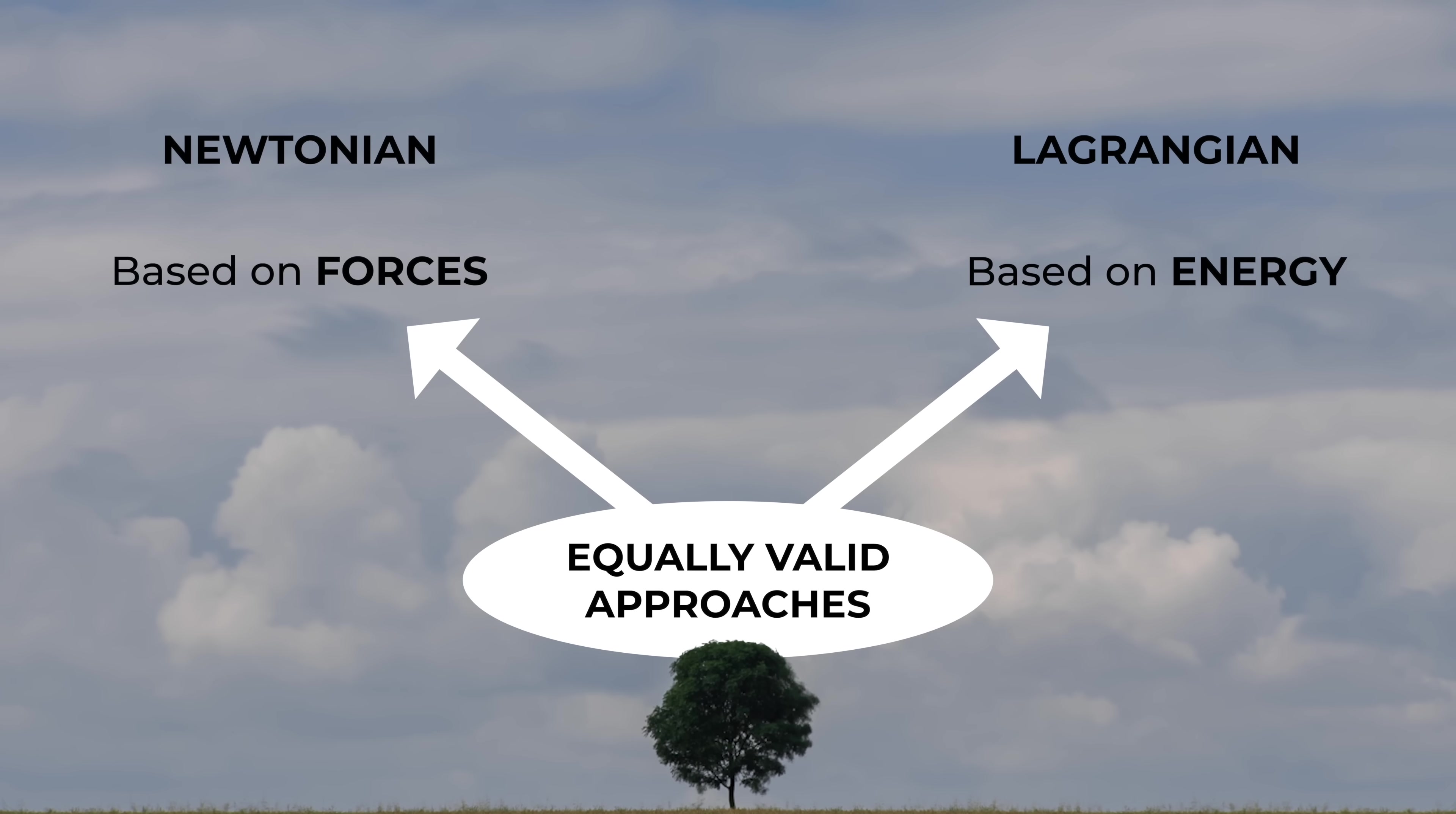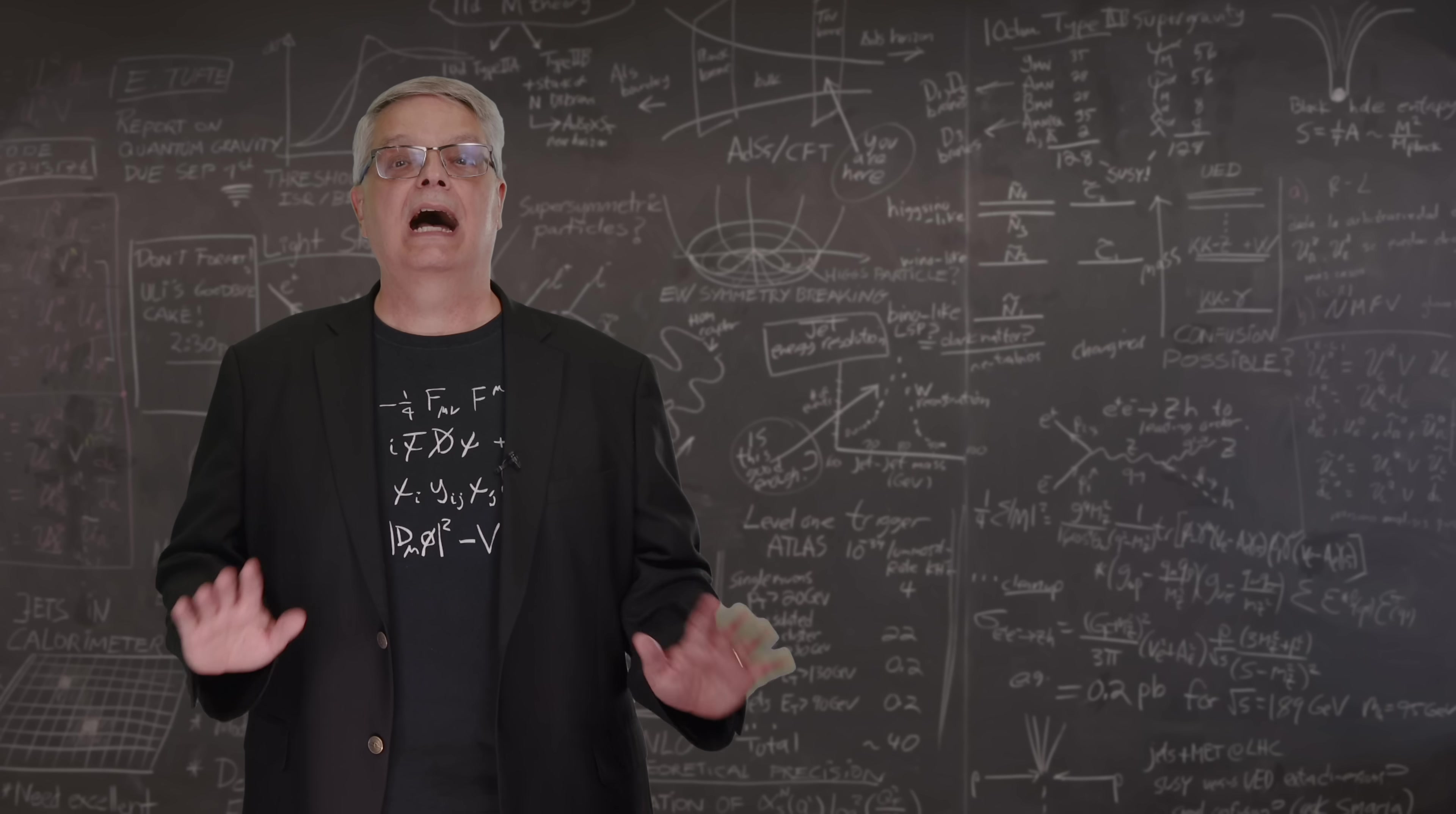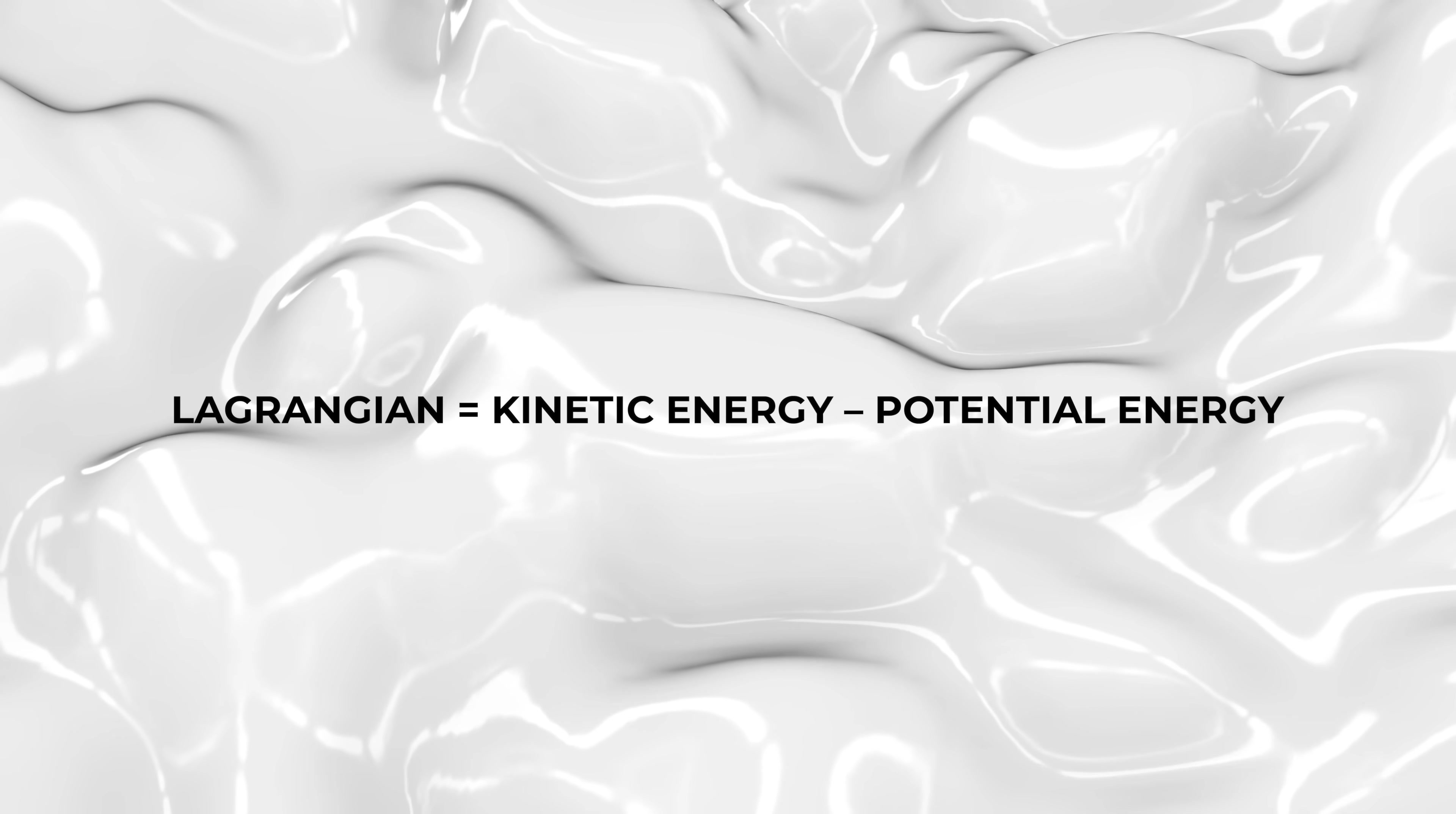Rather than using forces and accelerations, the Lagrangian is built using energy. Energy being a scalar, which means it has no components, is much easier to work with. So just how do you make a Lagrangian? The full answer can be a bit tricky, but in the world of standard classical physics, the Lagrangian is usually written as the Lagrangian equals kinetic energy minus potential energy.